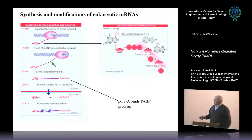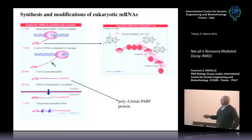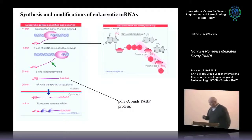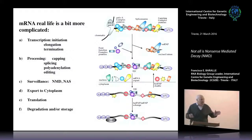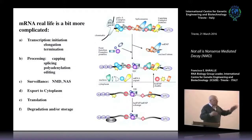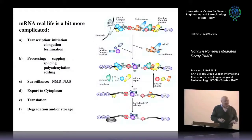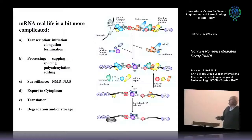There are several interactions. PolyA binds PABP protein and there are cap binding proteins and so on. Obviously, the real life is a bit more complicated. The RNA, as soon as it's transcribed, is covered with many proteins. Most of them, we don't know what they are doing there.